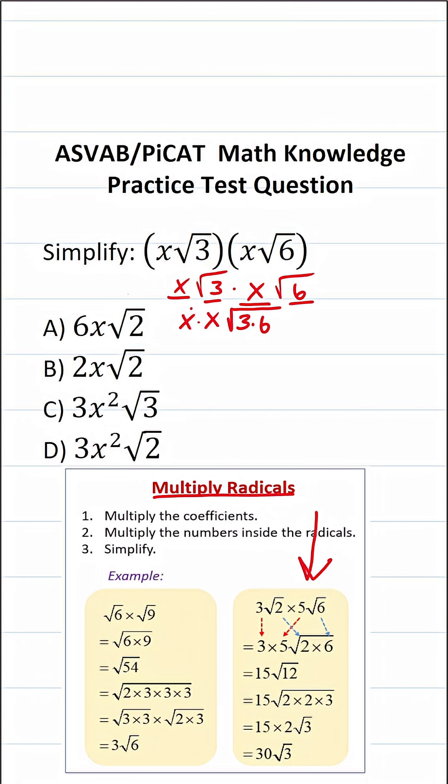we're going to multiply three and six. So just like that, we multiply these two radicals. The only thing we really have to do is simplify this.